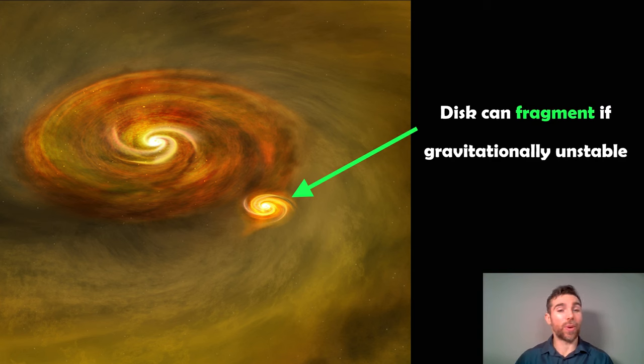You get this fragmentation due to a local gravitational instability and end up with essentially two stars forming in the disk. Because they're already in this rotating system, you end up with a binary star system orbiting a common center. That's one way you can get a binary star from fragmentation of the disk during star formation.